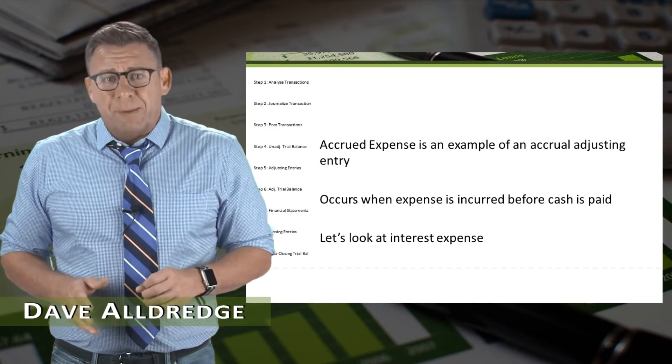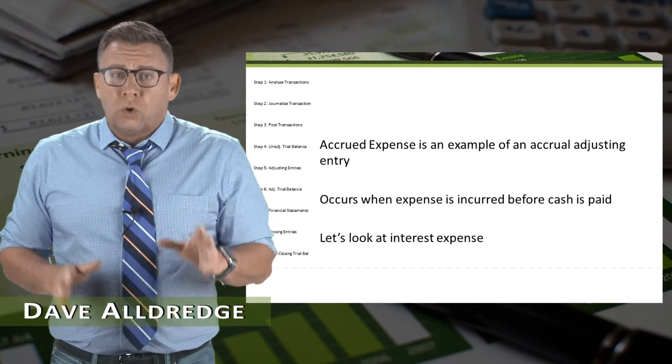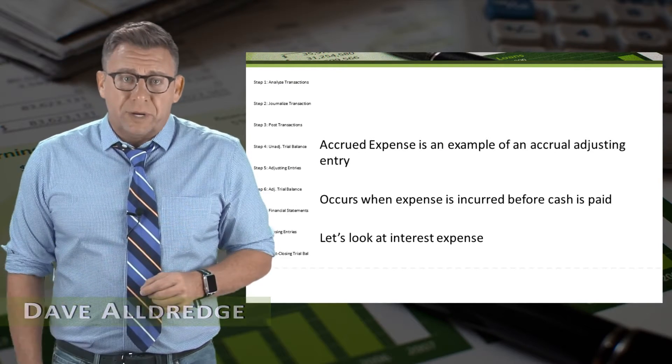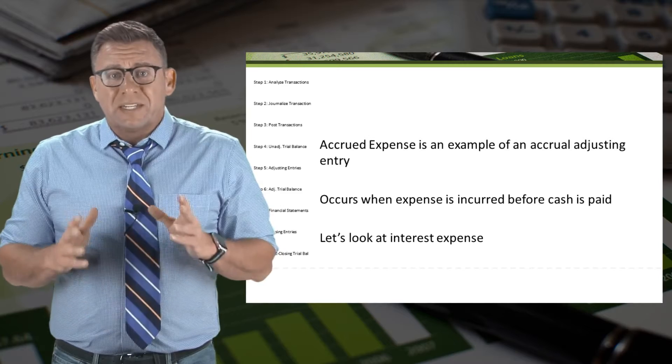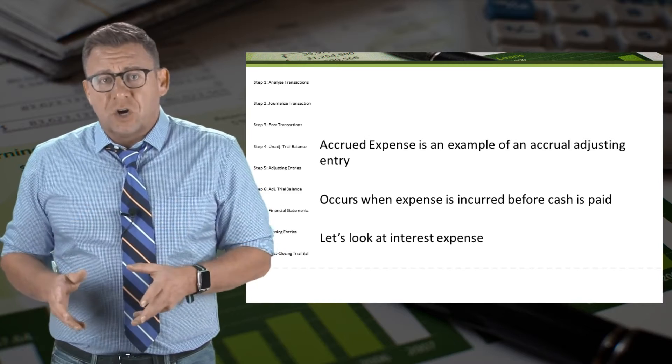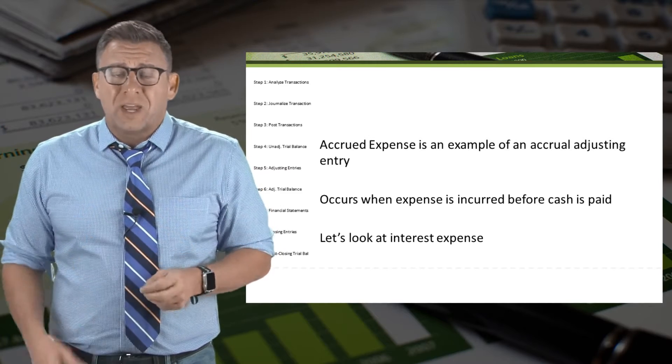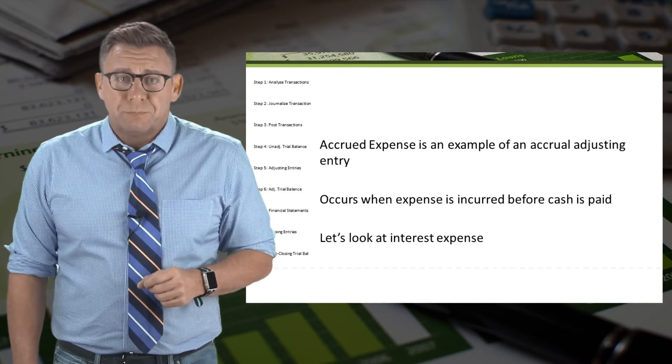Accrued expense is an example of an accrual adjusting entry. It occurs when an expense is incurred before cash is paid.